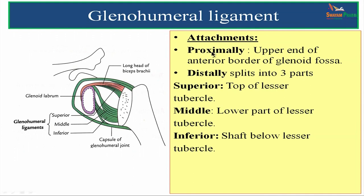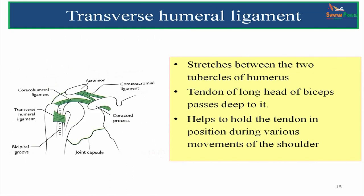The glenohumeral ligament: proximally it is attached to the upper end of the anterior border of the glenoid fossa; distally it splits into three bands — superior attaching to the upper part of the lesser tubercle, middle to the lower part of the lesser tubercle, and inferior to the shaft of the humerus below the lesser tubercle. The transverse humeral ligament stretches between the greater tubercle and the lesser tubercle, forming a gap for the tendon of the long head of biceps to pass deep to it, holding the tendon in position during shoulder movements.